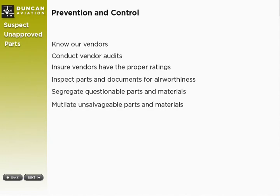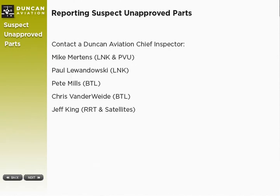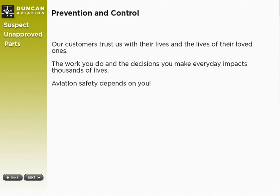When aviation parts reach the end of their life cycle and need to be thrown away, they must be completely mutilated in order to prevent the item from being salvaged and resold back into the aviation market. Once Duncan Aviation has identified an item as meeting the criteria for a suspect unapproved part, it is critical we take immediate action and report the incident to the FAA. If you think you find an item qualifying as a suspect unapproved part, please contact one of the chief inspectors for further guidance right away. They will investigate the item further, and if necessary, they will report the unapproved part according to FAA procedure.